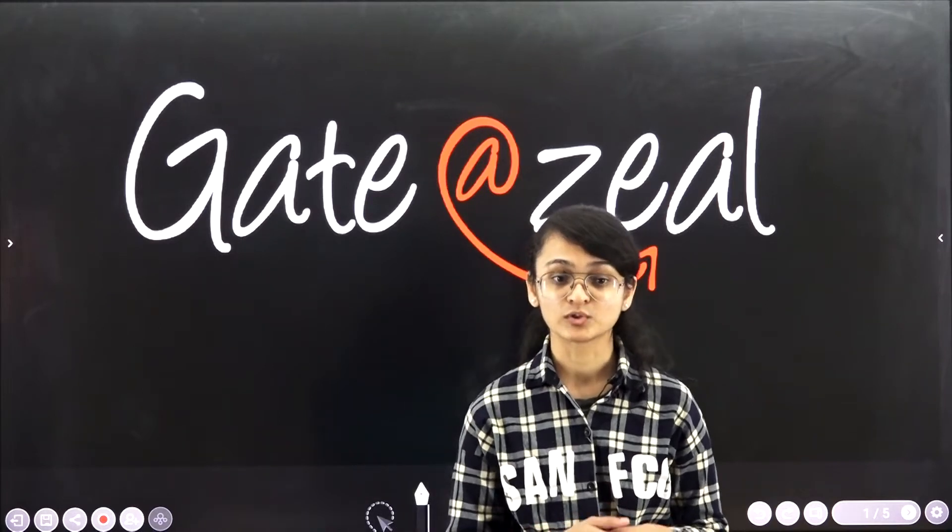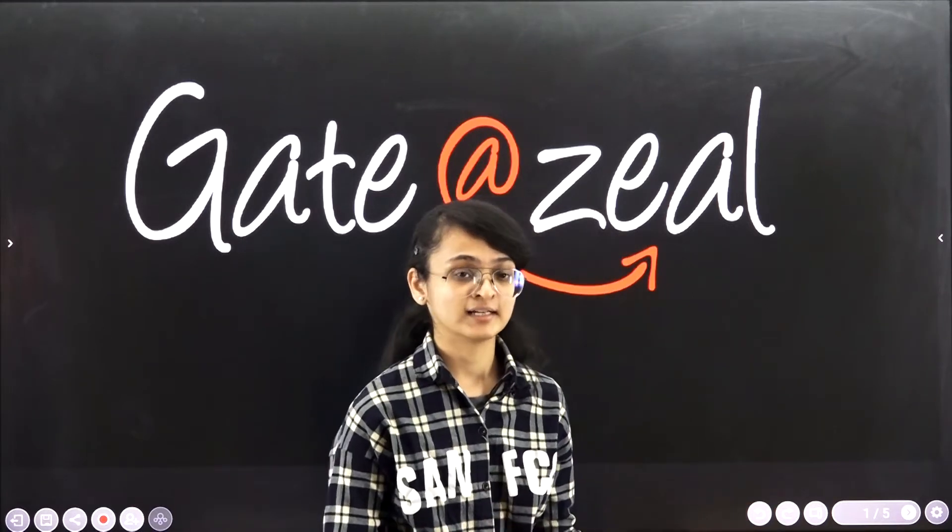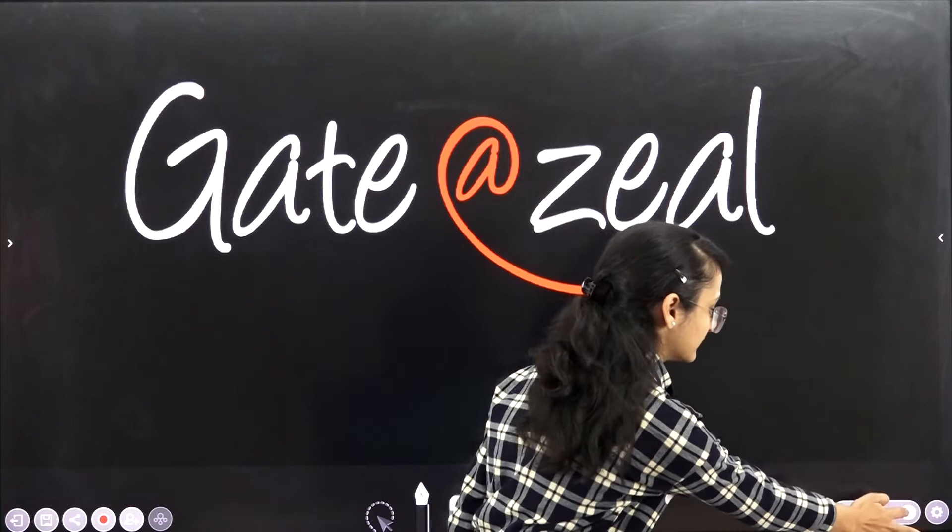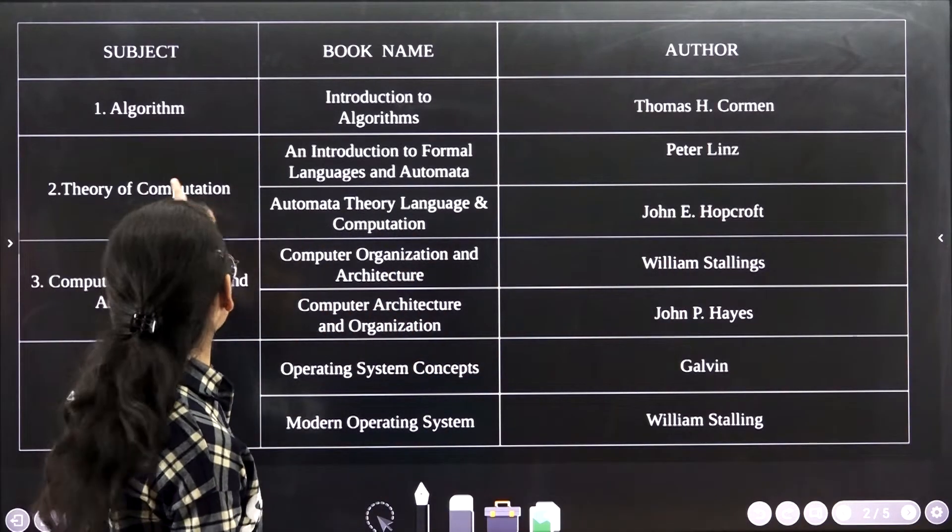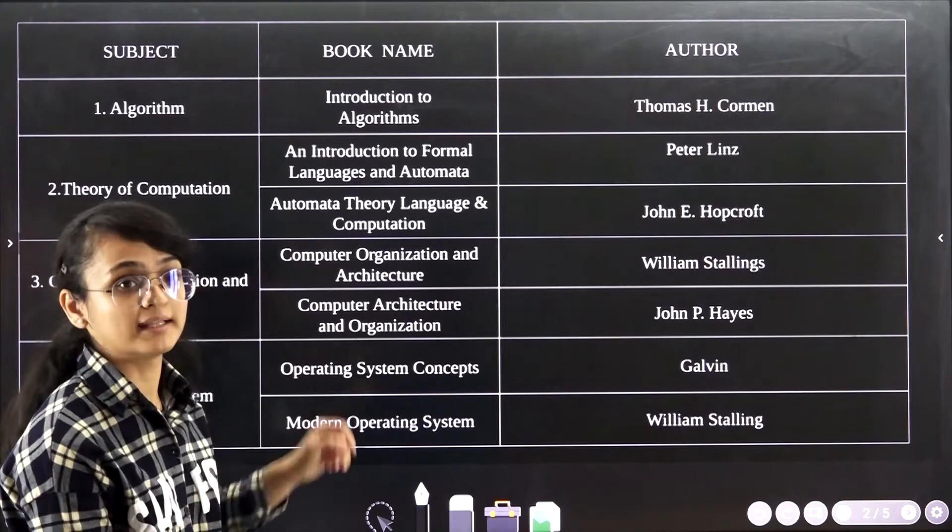One more thing, there is a special announcement at the end of this video, so kindly follow this video till the end. So let's get started. The first book is for Algorithm. The book that I follow for Algorithm is Introduction to Algorithms by Thomas H. Cormen.